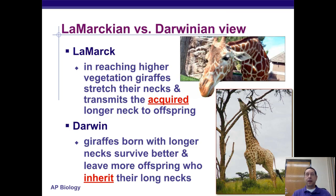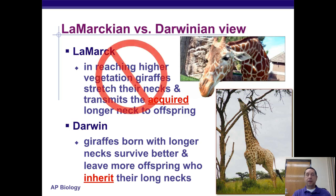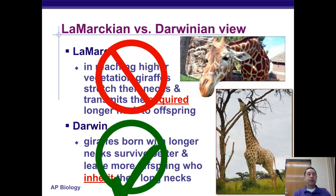To compare the two ideas using giraffes: Lamarck said giraffes reached for higher vegetation, stretched their necks, and transmitted those acquired traits to offspring. Darwin said giraffes are born with long necks because their DNA tells them to have long necks — they've inherited that trait. Darwin is correct. Lamarck is not.